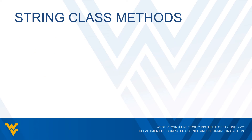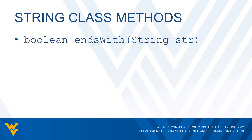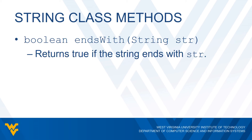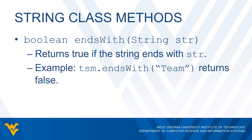The last string method we'll take a look at is another Boolean method called endsWith. This simply returns true if our string ends with the string we pass in. So using our example, if I do TSM.endsWith('team'), this is going to return false because our string doesn't end with 'team'. But if I do TSM.endsWith('mid'), that would return true because our string does end with 'mid'.